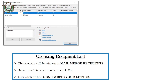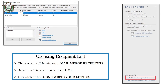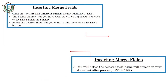The records will be shown in Mail Merge Recipients. Select the data source and click OK. Now click Next: Write Your Letter. To insert merge fields, click on Insert Merge Field under the Mailings tab, then click on Insert Merge Field and the Insert button.